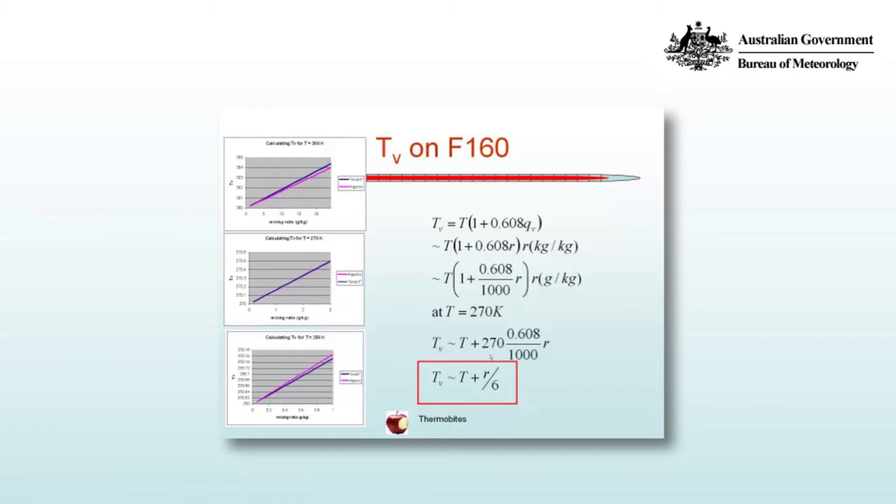But R is measured in kilograms per kilogram in that case, and that's inconvenient on a skew T log P. So we'll measure R in grams per kilogram, but we need to divide through by a thousand. So we have that messy expression in the third line that Tv is approximately equal to T multiplied by 1 plus 0.608 on a thousand by R.